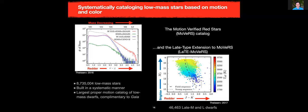I also built a secondary catalog called the Late-type Extension of MOVERS — LATE MOVERS. These are much colder objects, a mixture of stars and brown dwarfs. In order to build that catalog, I had to recalibrate all of the Sloan astrometry for these extremely red sources, because their position measurements are based on blue bandpasses, but these are very red sources, so we had to calibrate them to the red bandpasses. These objects in the late movers catalog go down to below 2000 Kelvin, so now we're into the brown dwarf regime.